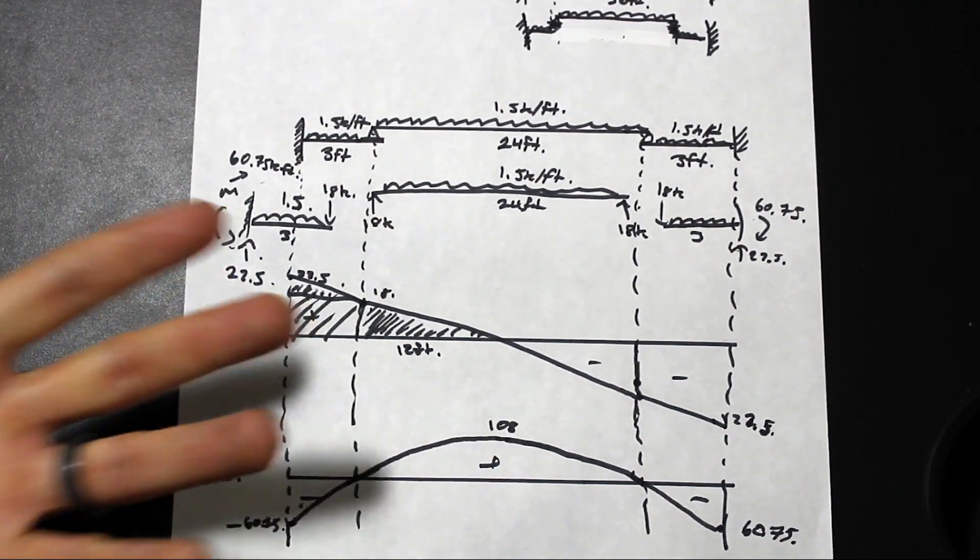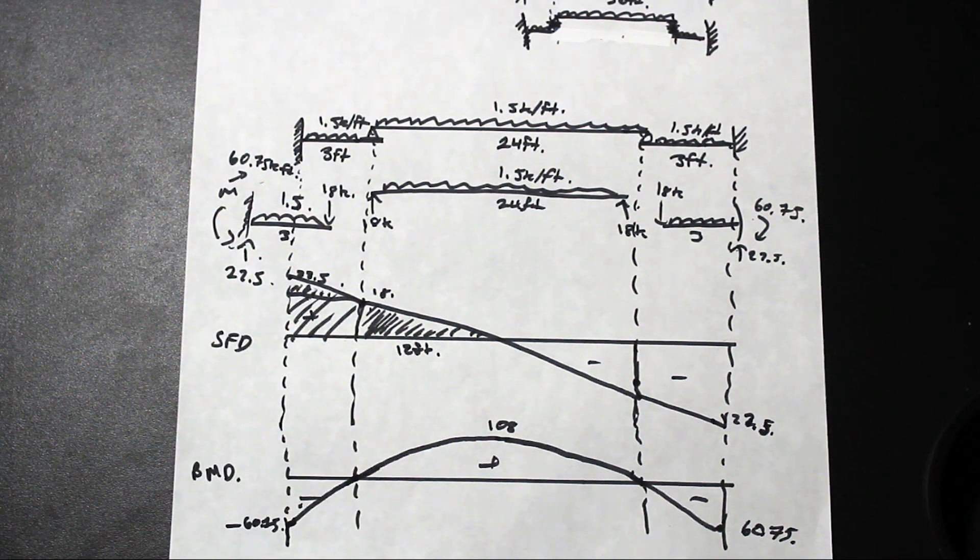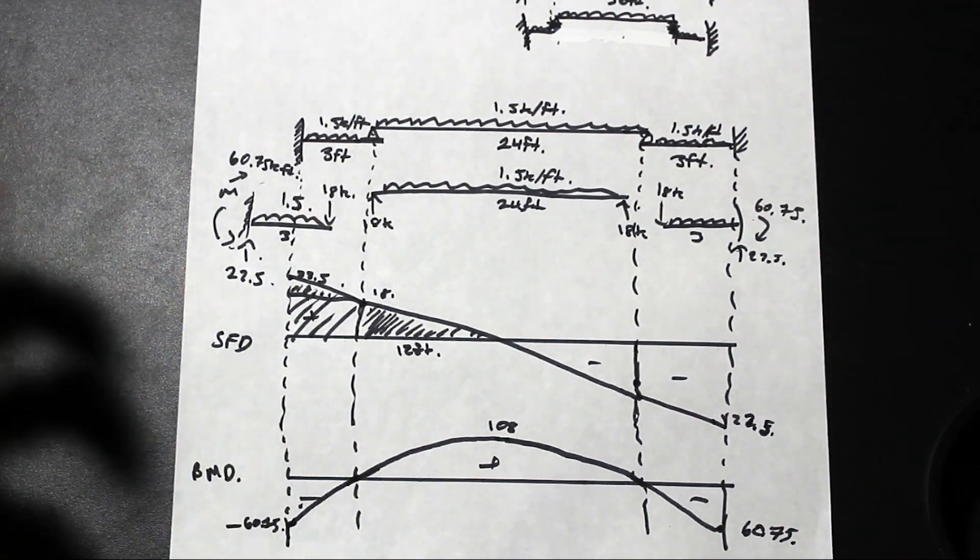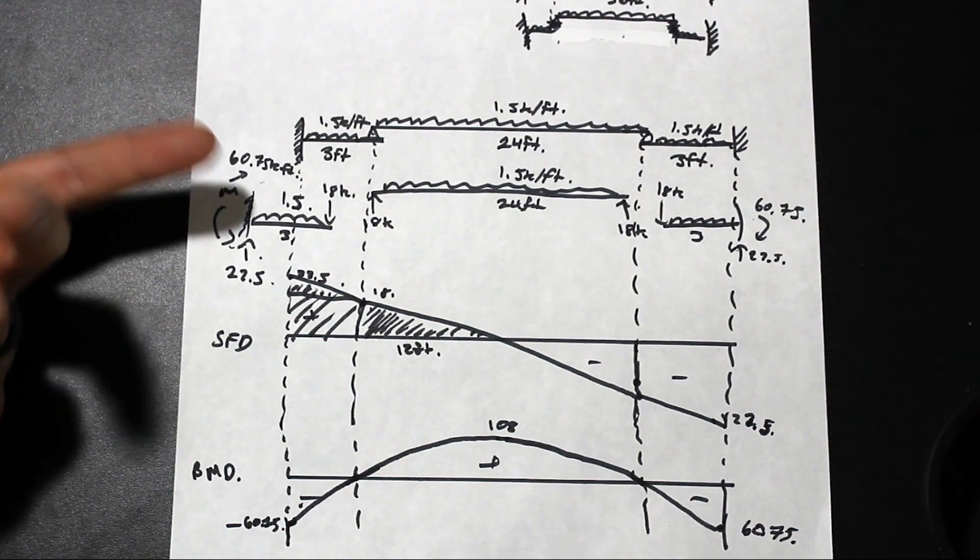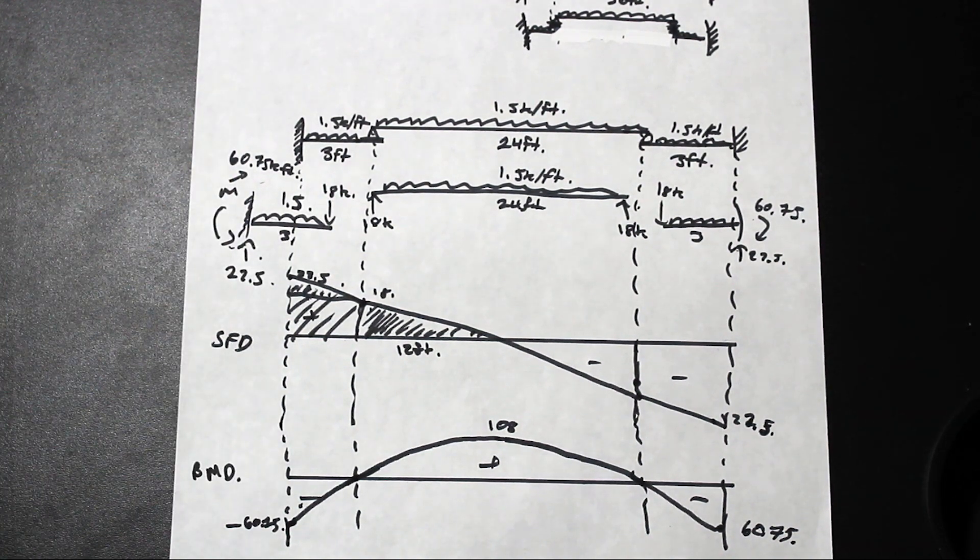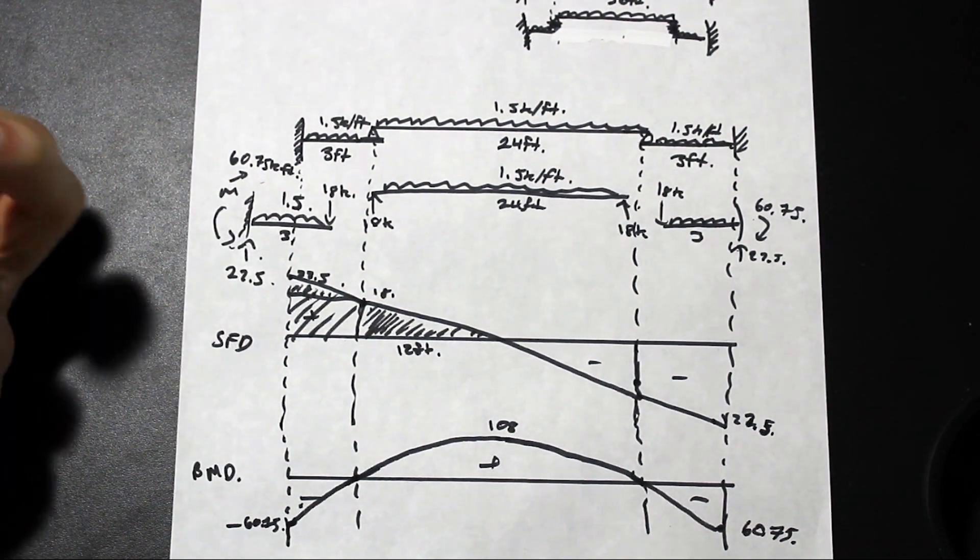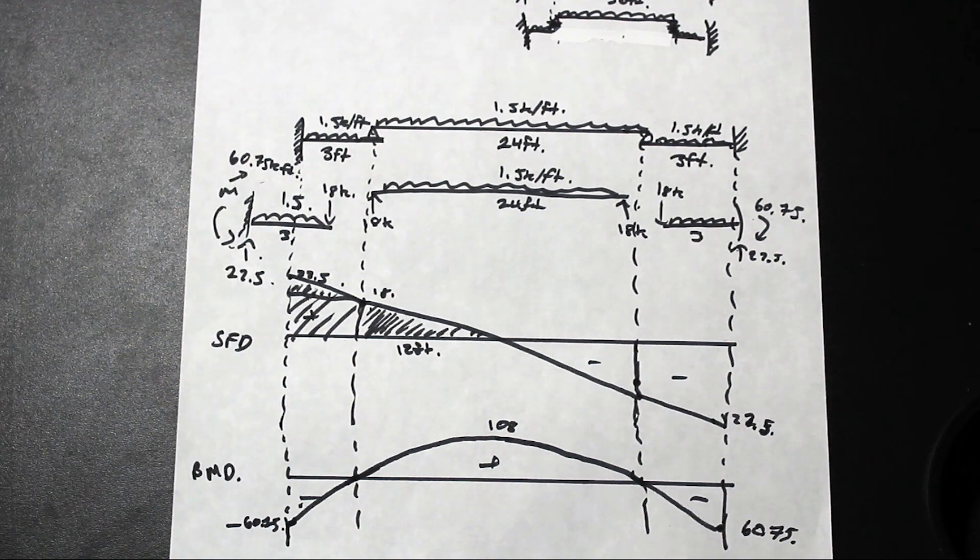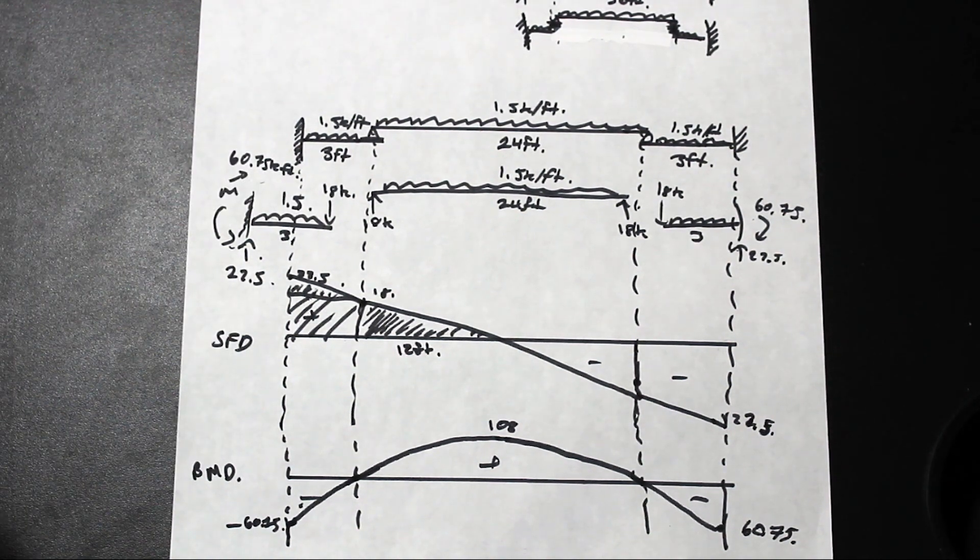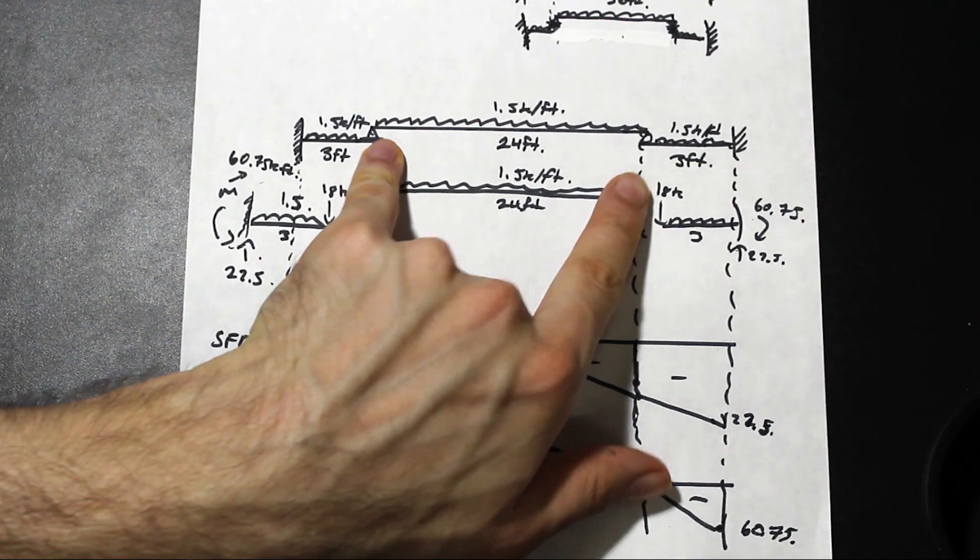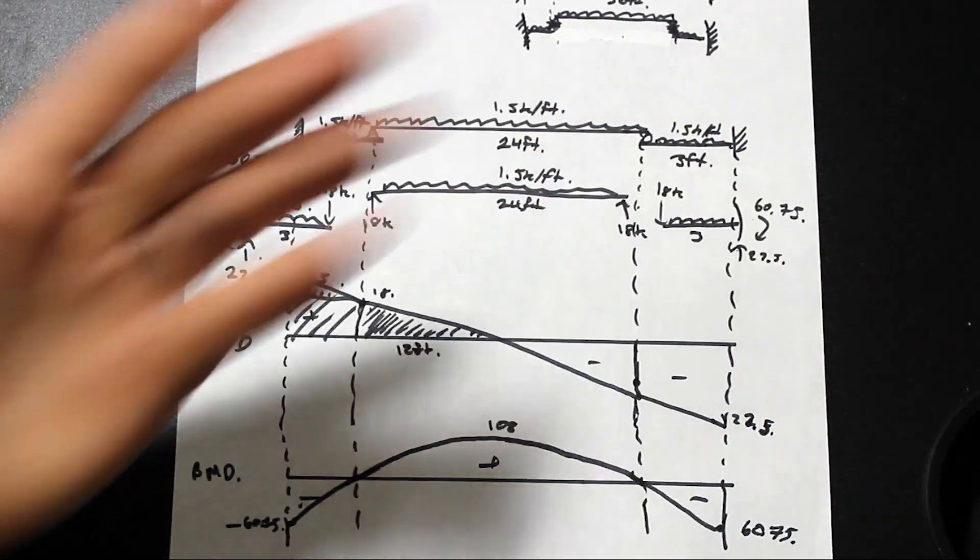Because that's the main assumption that we need to use in this method. So just the things to take away from this method, really, the assumptions: one, make sure there's only gravity loads, two, make sure that there's no axial loads, no lateral forces, and that we're assuming that the inflection points are happening at 0.1L from each side of the face.